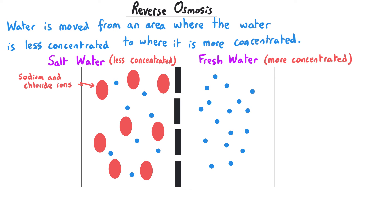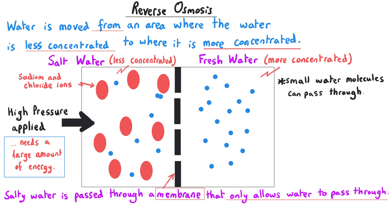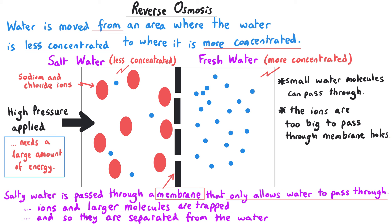In reverse osmosis, water is moved from an area where it is less concentrated—the left side of this diagram—to where it is more concentrated on the right side. Salty water is passed through a membrane that only allows water molecules to pass through. Energy is needed to supply high pressure to the left hand side. The water passes through the membrane, but ions and larger molecules are trapped because they're too big. The water produced on the right side is potable water because the salt is trapped on the left side.